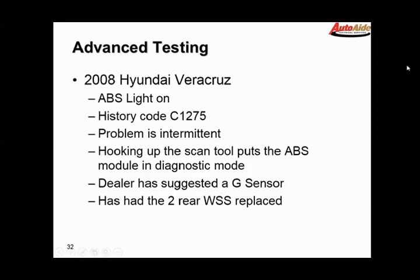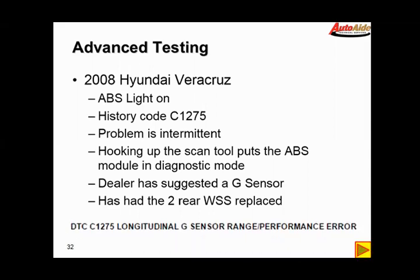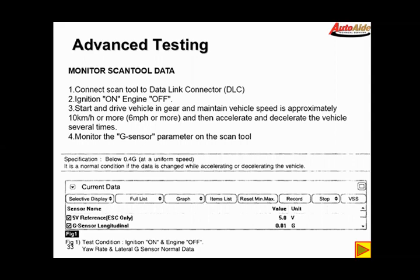Now to give you an idea how important it is to be able to test these wheel speed sensors in a bunch of different ways, I'm going to use a case study that was actually given to me by Kevin Shaw from OK Tire in Thornbury. Kevin's a really smart tech; he did a really good job on this one. The vehicle here is a 2008 Hyundai Veracruz. ABS light on. It sets a C1275 code. Problem is intermittent but can be reproduced on a road test. Unfortunately, hooking up a scan tool puts the ABS module in diagnostic mode, which really doesn't help. It's had a couple of wheel speed sensors put on, and I think the dealer suggested a G sensor. The code 1275 is a longitudinal G sensor range/performance error.